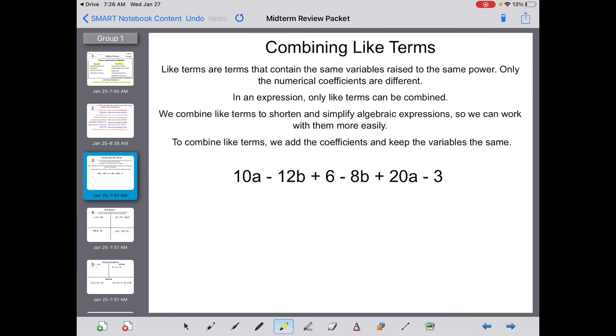Combining like terms. Like terms are terms that contain the same variables raised to the same power. Only the numerical coefficients are different. In an expression, only like terms can be combined. We combine like terms to shorten and simplify algebraic expressions so we can work with them more easily. To combine like terms, you add the coefficients and keep the variables the same.